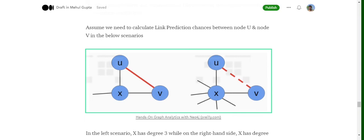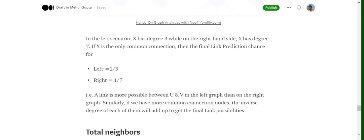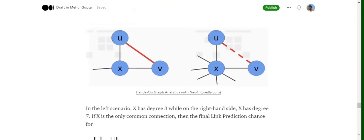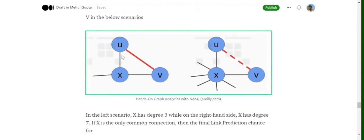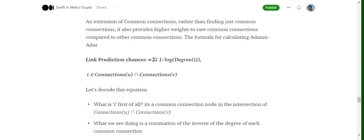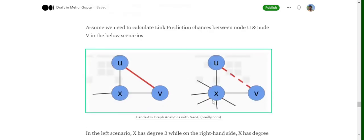So the formula is given by summation over i of 1 over log(degree of i). So assume that if we move with an example, in the first case the Adamic-Adar value would be 1 over log(3), because U and V have just one connection that is X, and X has degree 3. So if we go by the formula summation of 1 over log(degree of i), so 1 over log(3). Now eventually in case of the second image, as X has many values, the value of Adamic-Adar would be 1 over log(7).